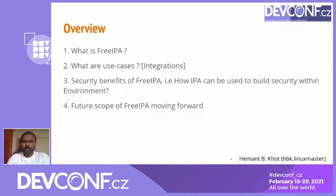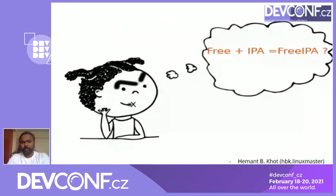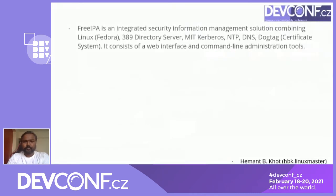When I say FreeIPA, those who don't know about it might think it is something free and IPA collectively called as FreeIPA — yes, it's the same. FreeIPA is an upstream project and downstream it is called Red Hat Identity Management. Likewise, it is free upstream, and with a Red Hat subscription you can use it free of cost.